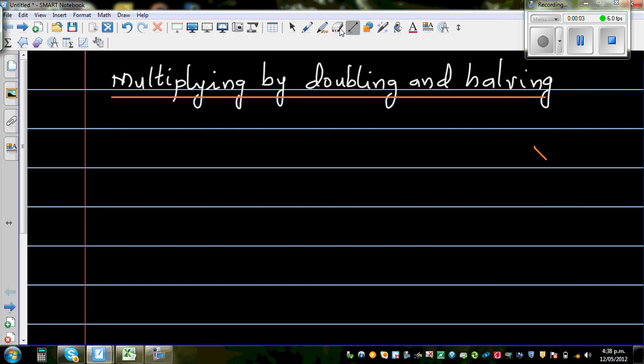In this video I'm going to talk about how you can multiply by using a strategy called doubling and halving. This is a very good strategy to use when you have questions which can be done very easily. So let's start with a simple question.